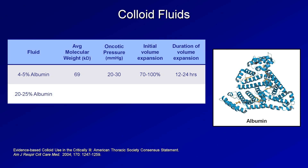Another colloid is 20-25% albumin, or high concentration albumin. The average weight of albumin is unchanged since it's the same molecule, but the higher concentration results in higher oncotic pressure. The volume expansion here is closer to 300-500% — meaning if you were to infuse 200 mL of 25% albumin, not only would that 200 mL stay in the intravascular space, but the very high oncotic pressure would draw in up to an additional 800 mL from the interstitial and intracellular spaces. Decreasing those volumes so quickly could be problematic if the patient is starting off hypovolemic. Therefore, 25% albumin should not be used for resuscitation of hypovolemic patients.